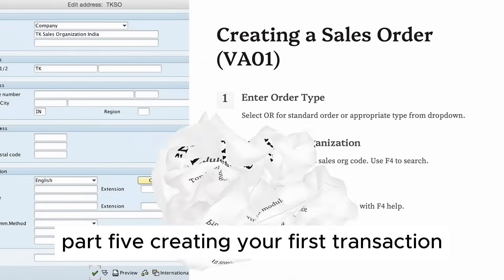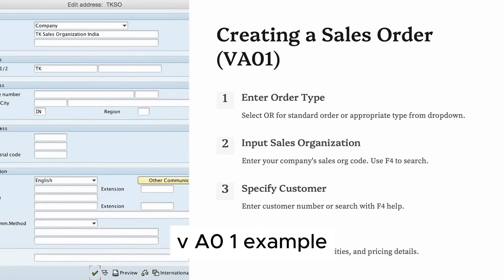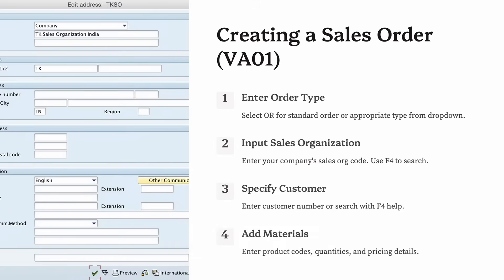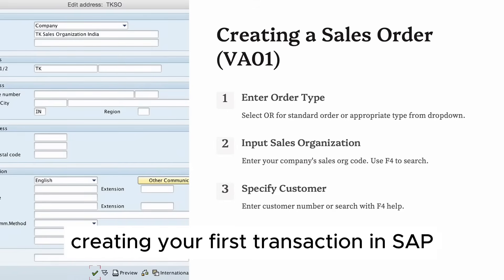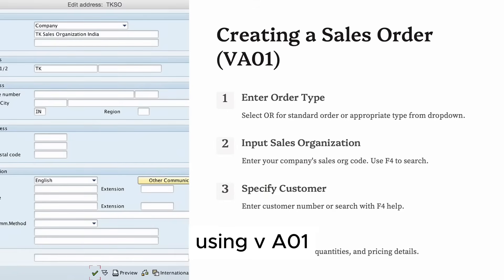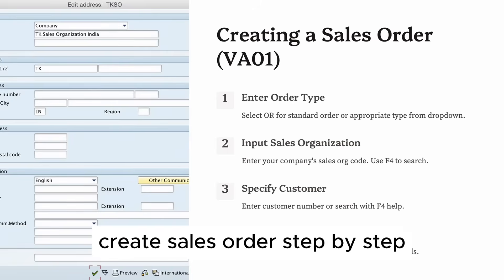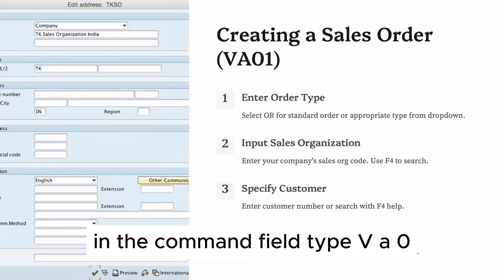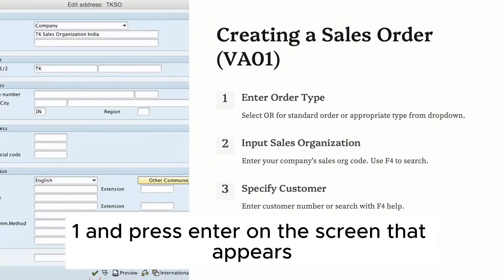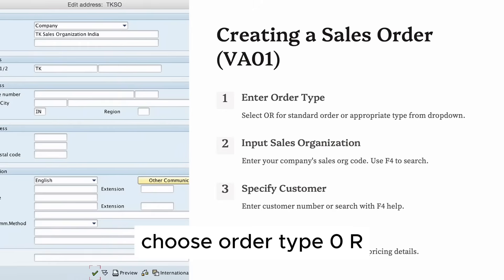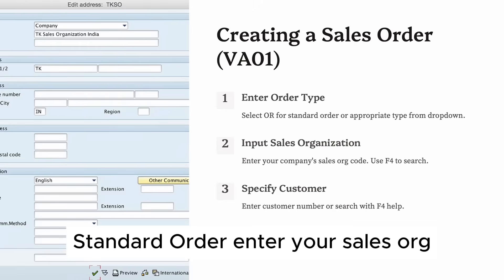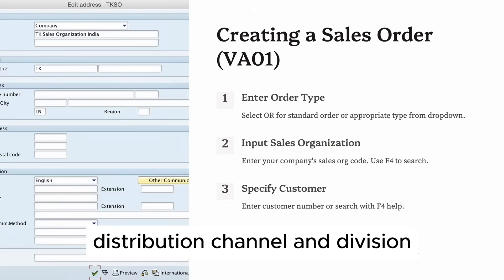Part 5: Creating your first transaction — VA01 example. Let's now walk through creating your first transaction in SAP using VA01: Create Sales Order. Step by step: in the command field, type VA01 and press Enter. On the screen that appears, choose order type OR — Standard Order. Enter your sales org, distribution channel, and division, then click Enter. You'll go to the next screen.